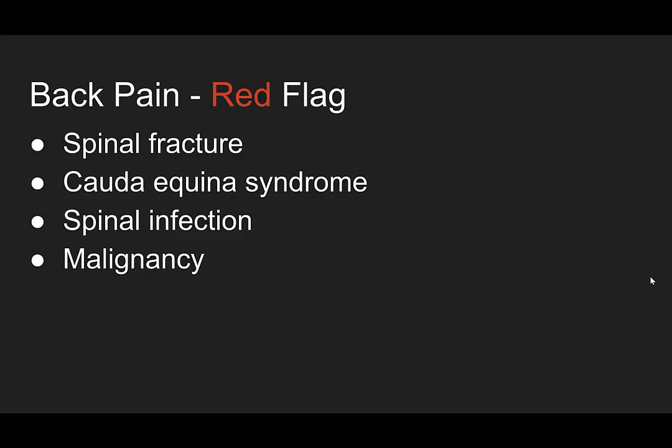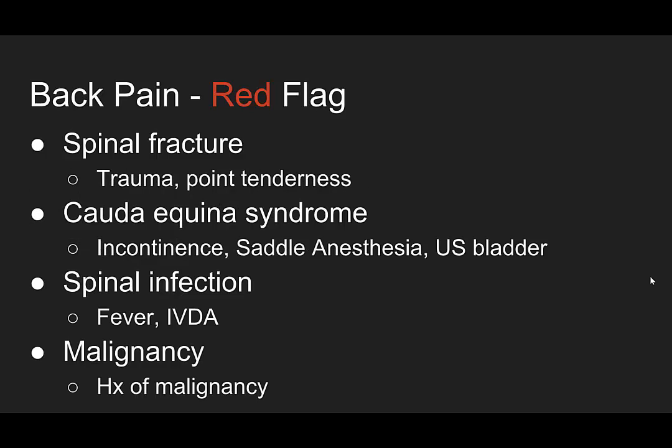What are our red flags for back pain? Your diagnoses of concern are spinal fractures, cauda equina syndrome, spinal infection, and malignancy. For fractures, ask about trauma or midline point tenderness. For cauda equina syndrome, ask about bladder and bowel incontinence and saddle anesthesias — throw the ultrasound on them and look at that bladder to see if it's distended. For spinal infection, always ask about fever and IV drug abuse. If worried about metastases, ask about history of malignancy, family history, and cancer elsewhere in the body. With all low back pain patients, have a very low threshold for the rectal exam.